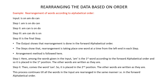Now let's look at the changes taking place from input to output. When you look at input to step 1, you will see that 'am' is moved to the first position at the left end and the rest of the words are written as they are. In step 2, 'can' is moved to the second position and the rest of the words are written as they are; observe that 'am' has retained its position. In step 3, 'do' is moved to the third position and the rest of the words are written as they are; observe that 'am' and 'can' have retained their position. Step 3 is the final step because 'is' and 'on' are already auto arranged.